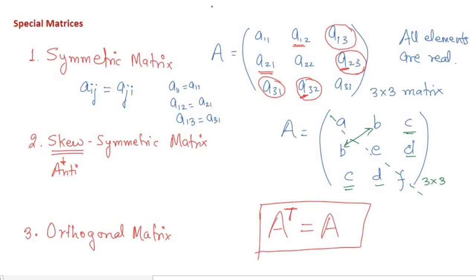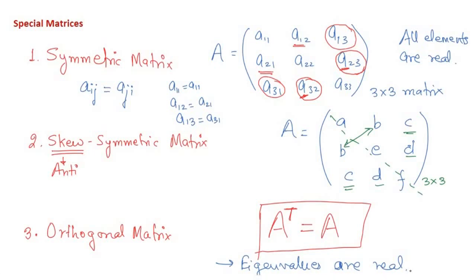The eigenvalues of a symmetric matrix are all real. We are going to prove this later. For now, remember: for a symmetric matrix, A^T = A and all eigenvalues are real.